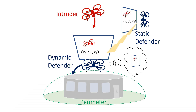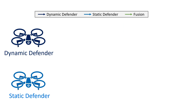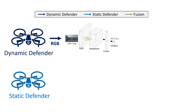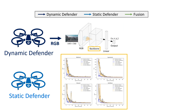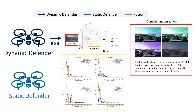In this work, we simulate vision-based parameter defense. Given the defenders, we train a neural network to estimate the intruder pose, considering four different backbones based on domain randomization.